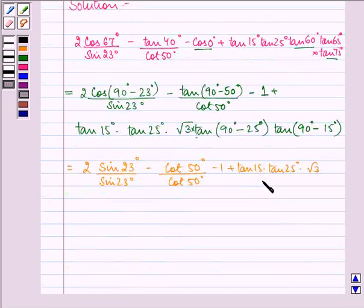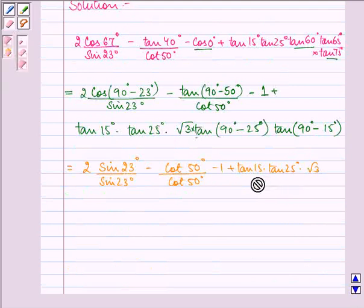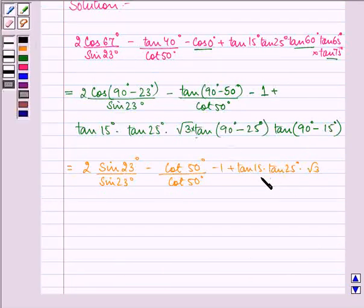plus tan 15° into tan 25° into root 3 into, sorry, cot 25° into cot 15°, which can now be written as